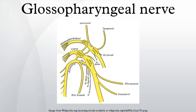In its passage through the foramen, the glossopharyngeal nerve passes between the internal jugular vein and internal carotid artery. It descends in front of the latter vessel and beneath the styloid process and the muscles connected with it, to the lower border of the stylopharyngeus. It then curves forward, forming an arch on the side of the neck and lying upon the stylopharyngeus and middle pharyngeal constrictor muscle. From there, it passes under cover of the hyoglossus muscle and is finally distributed to the palatine tonsil, the mucous membrane of the fauces and base of the tongue.